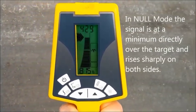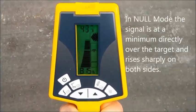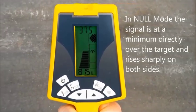In null mode, the signal is at a minimum directly over the target and right away from the target. The signal rises sharply on both sides.